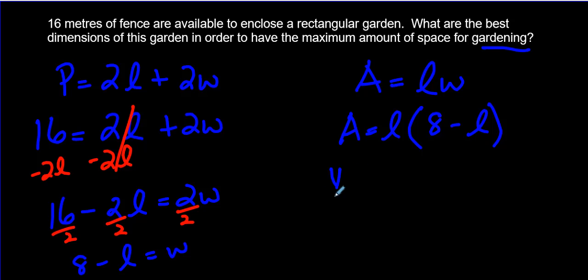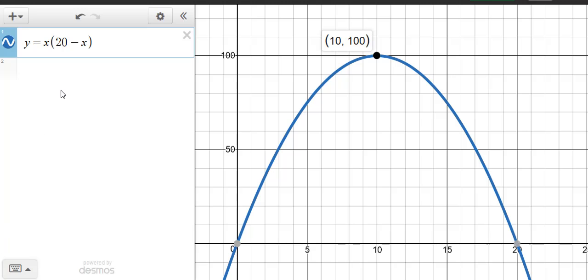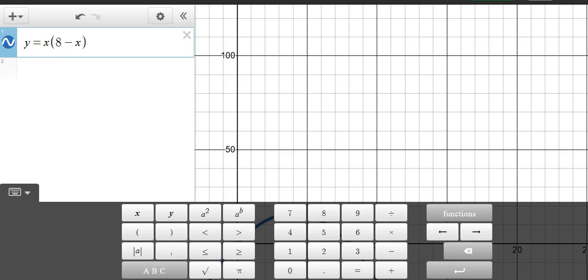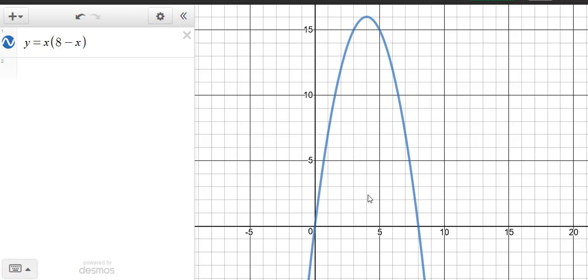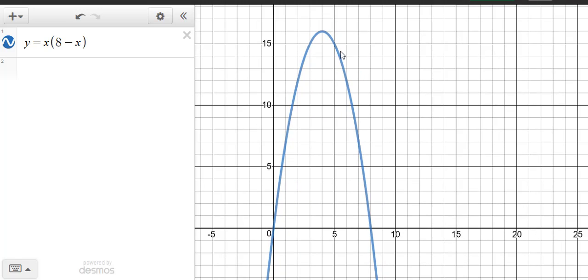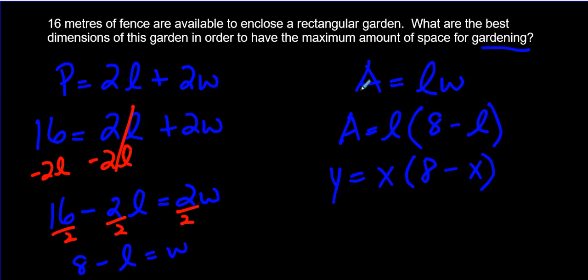Over here, we're going to say the maximum area is going to be length times, instead of width, we're going to write down what width is equal to, 8 minus L. Because we're using Desmos, I'm going to change this to Y and X. We'll just remember that X is talking about the length, and Y is talking about the width. So we go and type that in on Desmos. Make sure I got it in right. This time, no mess up. I'm going to hit this little home button for the default zoom, just so we can see it.